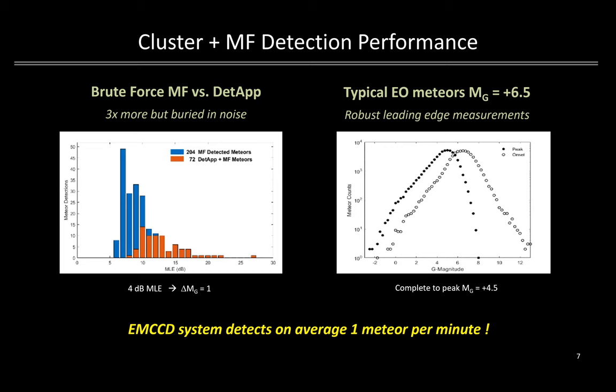For now, the system detects on average about one sporadic meteor per minute — which, by the way, would have been far too high a rate to manually perform measurements on, and thus a reliance on automated pick point generation with the match filter. The system EO magnitude sensitivity has met the desired goal. We are seeing meteors typically around plus 6.5, and are complete to a peak magnitude of plus 4 to 4.5, much lower than most existing optical meteor surveys.